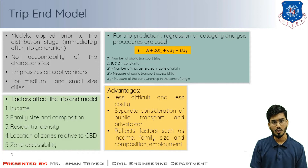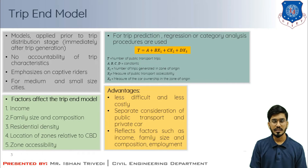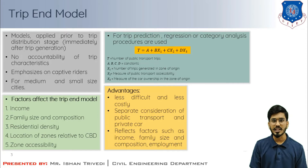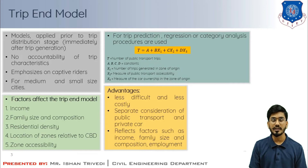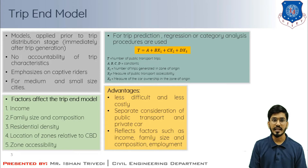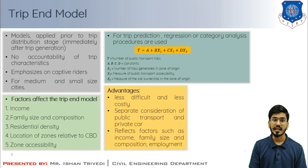Trip end models are less difficult and less costly as compared to the trip interchange model. This method considers separate public transport and private car modes, which is desirable because of the different trip lengths. The public transport has its own trip length and those using car as a mode of transport have their own trip length, and that is why separate studies are considered.